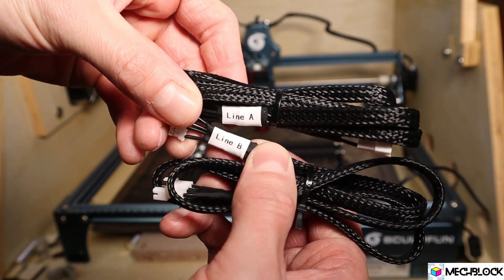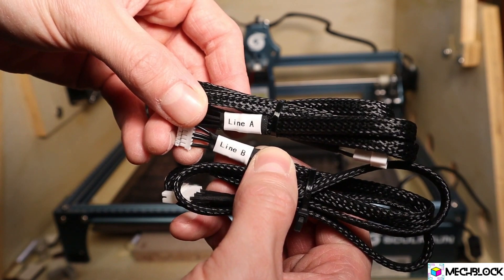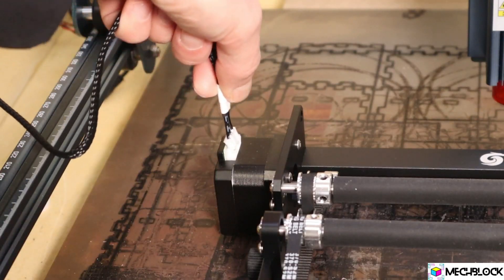In the package you also get two cables. One to use with the SculptFun and Atomstack machines and the other to use with Ortur and Najee laser engravers.